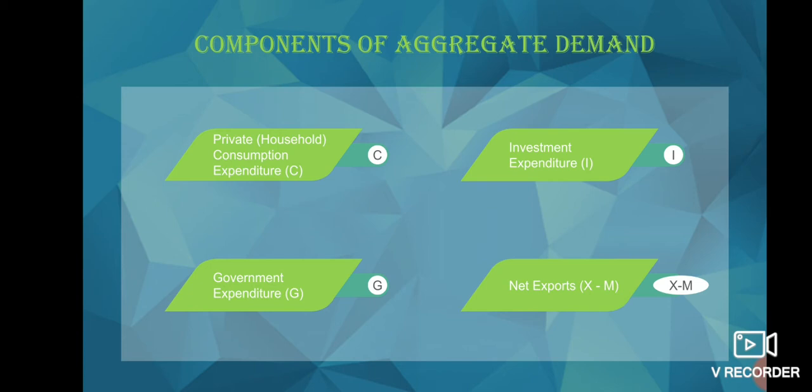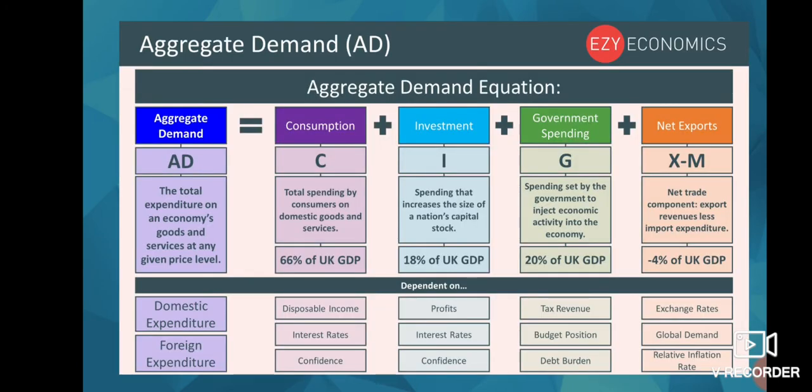These are the various components of aggregate demand. In general, aggregate demand is represented as AD = C + I + G + X - M, where C is consumption expenditure, I is investment expenditure, G is government spending, and X - M is net exports.